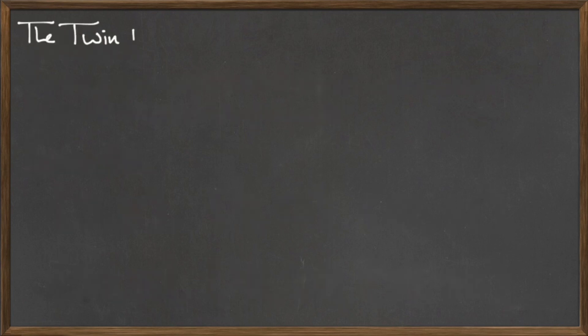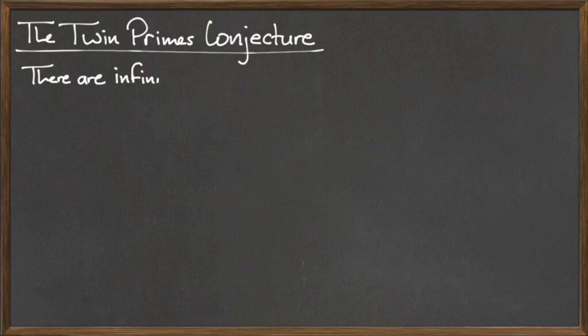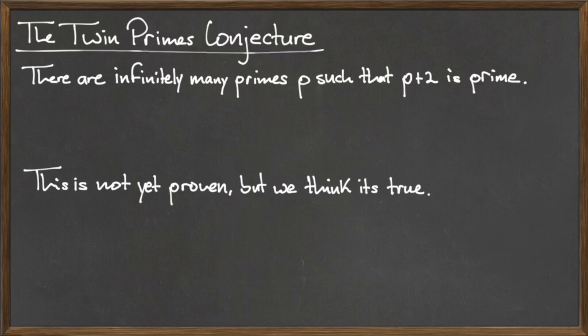The twin prime conjecture states that there are infinitely many primes p such that p+2 is also prime. In other words, there are infinitely many twin prime pairs.